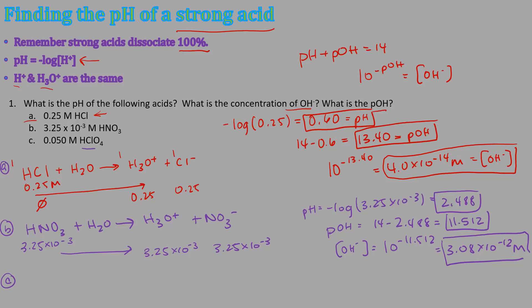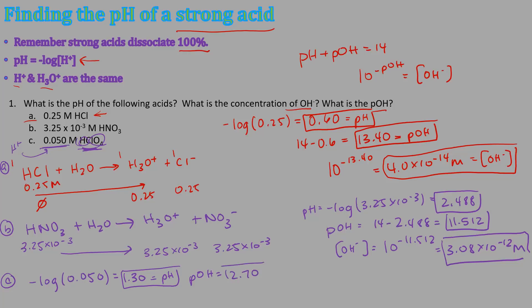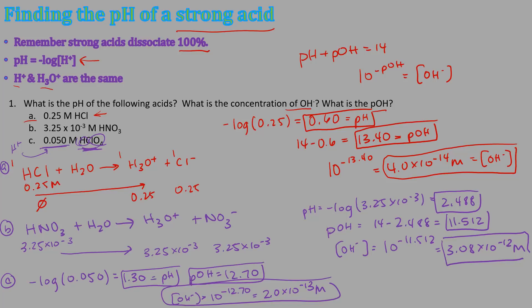For part C, perchloric acid is also a strong acid, so take the negative log of 0.050 to get pH = 1.30, since all of it dissociates into hydronium and perchlorate. The pOH is 12.70, and [OH⁻] = 10^(−12.70) = 2.0 × 10⁻¹³ M. Strong acids are straightforward — no extra steps needed since they dissociate completely. Remember, this only applies to monoprotic acids.